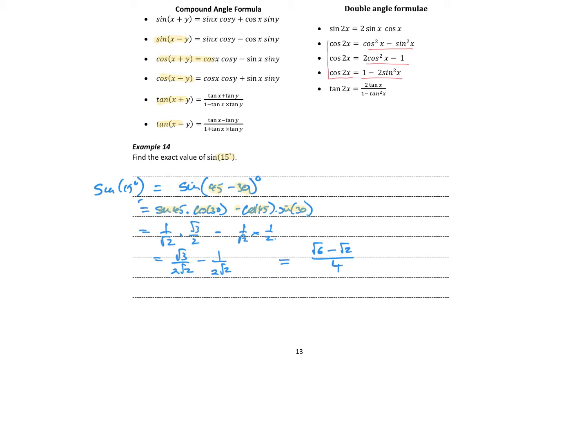So then just work out the exact values. It's 1 on root 2 times root 3 on 2 minus 1 on root 2 times a half. We'll get root 3 over 2 root 2 minus 1 over 2 root 2. So if you tidy up your surd on the bottom, you'll get root 6 minus root 2 over 4, which is the same as our calculator dump.